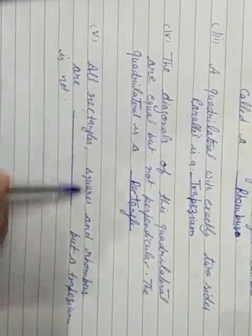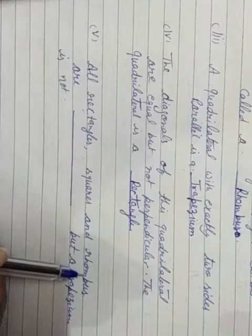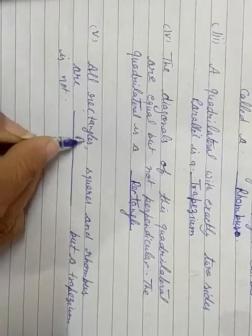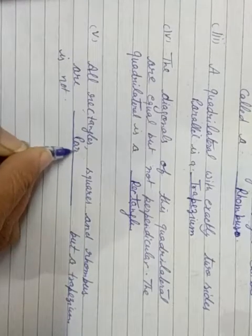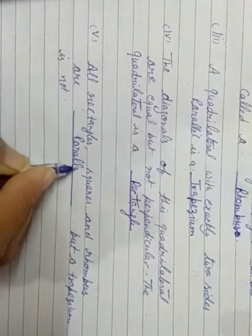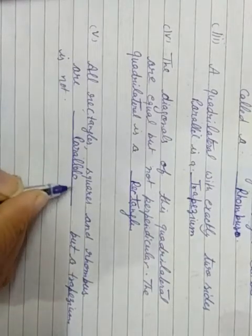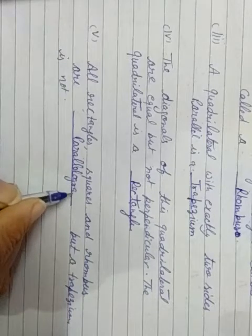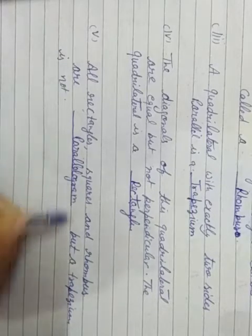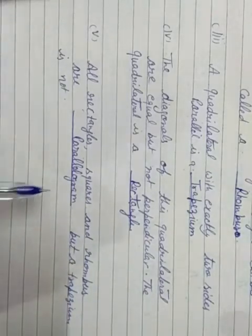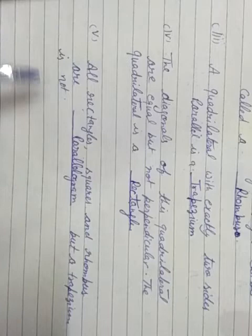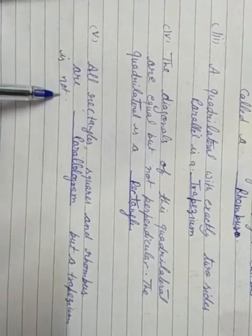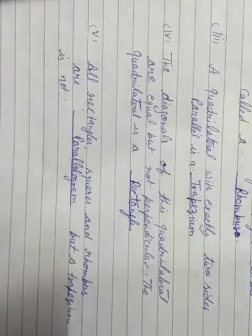All rectangles, squares and rhombuses are parallelograms. As I mentioned, square, rectangle and rhombus are also called parallelogram, but a trapezium is not a parallelogram.